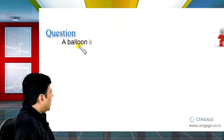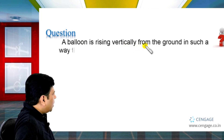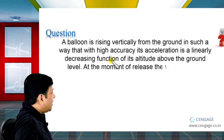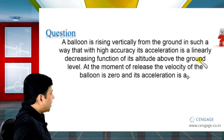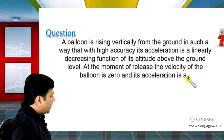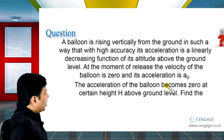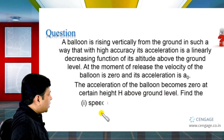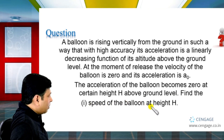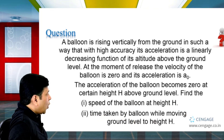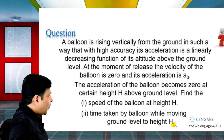In this problem, a balloon is rising vertically from the ground in such a way that its acceleration is a linearly decreasing function of its altitude above the ground level. At the moment of release, the velocity of the balloon is 0 and acceleration is A₀. The acceleration becomes 0 at a certain height H above the ground. We need to calculate: (1) the speed of the balloon at height H, and (2) the time taken by the balloon moving from ground level to height H.